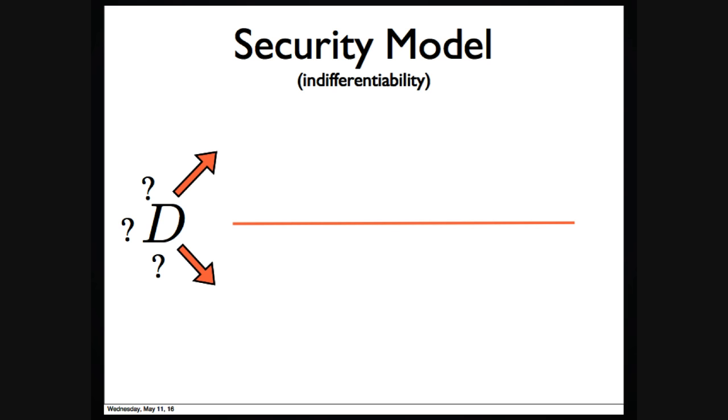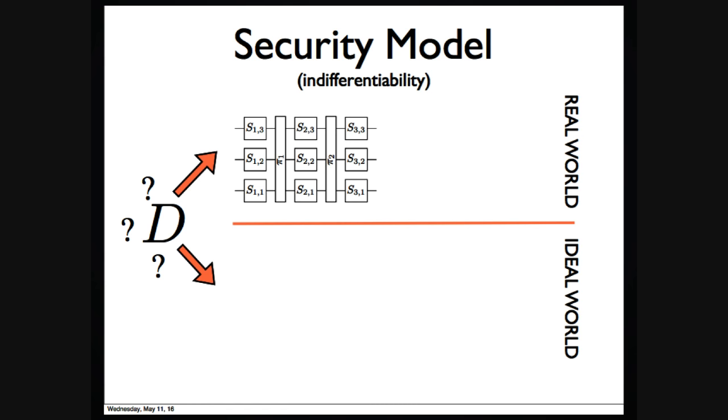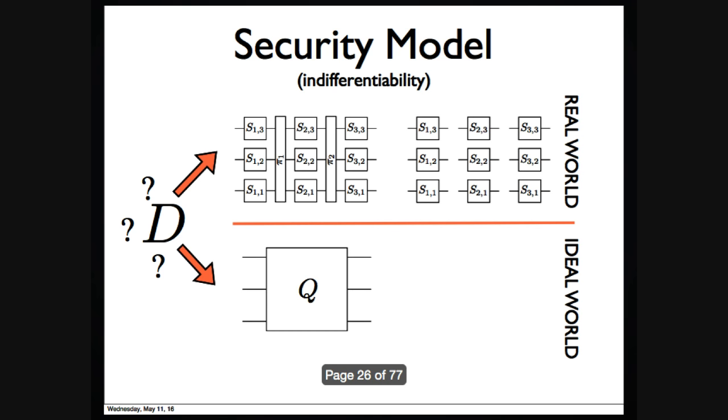Now, I'll define the indifferentiability security experiment. In such experiments, there will be two worlds: real world and ideal world. They can hardly be distinguished. In the real world, the distinguisher has oracle access to our construction in both directions. It also has oracle access to each individual S-box used in our construction. One more time: all S-boxes are independent, and the D-box, the diffusion box, is fixed.